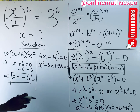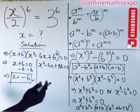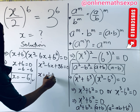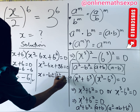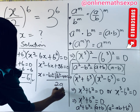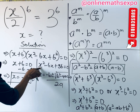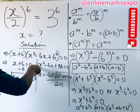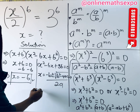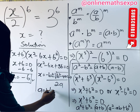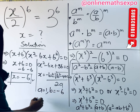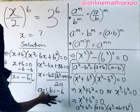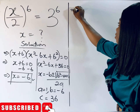The quadratic formula gives x = (−b ± √(b² − 4ac)) / (2a). Here, a is the coefficient of x², which is 1; b is the coefficient of x, which is −6; and c is the constant, which is 36. We substitute these into the formula.